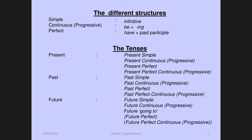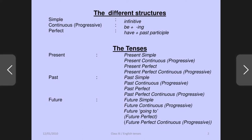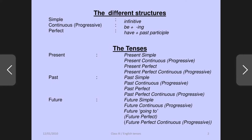The different structure: simple, continuous, and perfect. As we know, there are three kinds of tenses — the structure of tenses are three kinds: simple, continuous (which we can also call progressive), and perfect. Progressive and continuous are both the same.